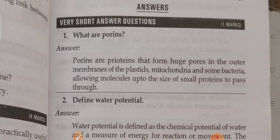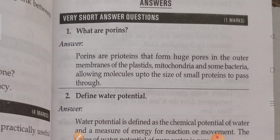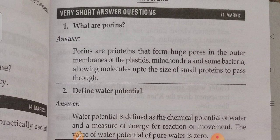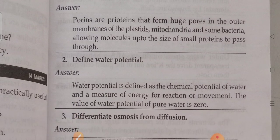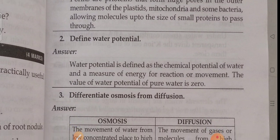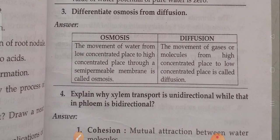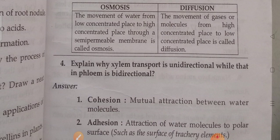Questions and answers are very important in the bridge course examinations. I am not explaining in detail — I am just showing the answers, which are two or three lines, so you can catch them by reading three or four times. Questions covered include: define water potential; differentiate osmosis from diffusion; explain why xylem transport is unidirectional while phloem transport is bidirectional.